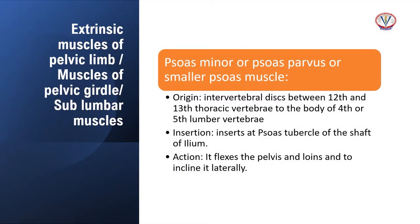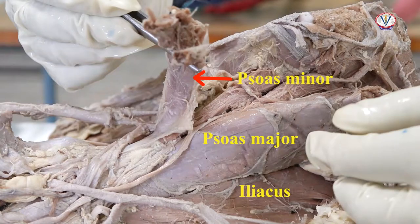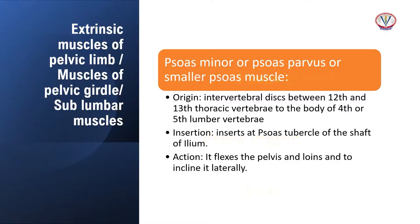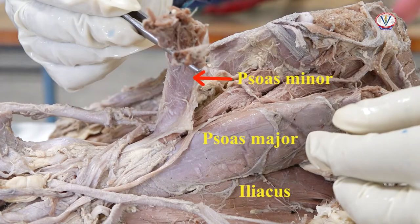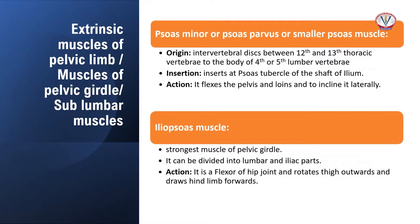Psoas minor, or psoas parvus, or small psoas muscle, arises from intervertebral discs between the twelfth and thirteenth thoracic vertebrae to the body of the fourth or fifth lumbar vertebrae, and inserts at the psoas tubercle of the shaft of the ilium. It flexes the pelvis and loin and inclines it laterally. Iliopsoas muscle is the strongest muscle of the pelvic girdle.